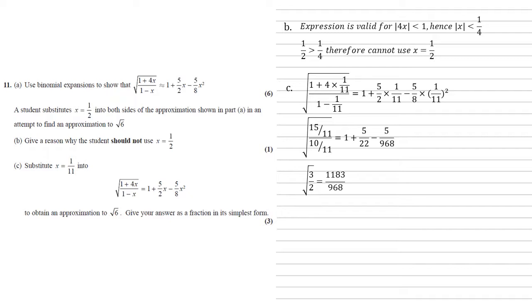Now we want to find an approximation for root 6. But if we look on the left hand side, we've got root 3 over 2. Well, that's equal to half of root 6. So if we double our approximation for root 3 over 2, we get 1183 over 484. And there's our answer.